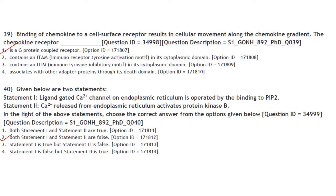Given two statements: Statement 1 — The ligand-gated Ca²⁺ channel on the endoplasmic reticulum is operated by binding to IP3 (not PIP2). Statement 2 — Ca²⁺ released from the ER activates protein kinase C (not protein kinase B). Both statements 1 and 2 are false. Answer is option 2.